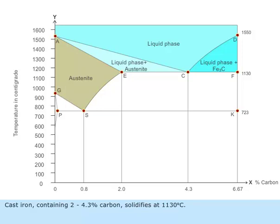Cast iron containing 2 to 4.3 percentage carbon solidifies at 1130 degrees centigrade.